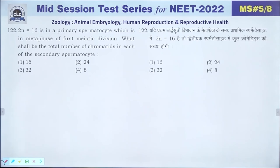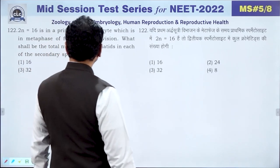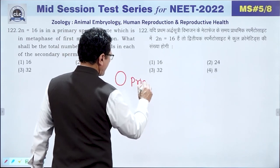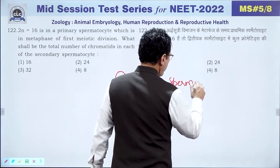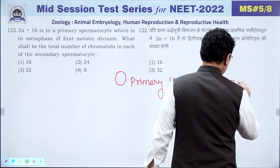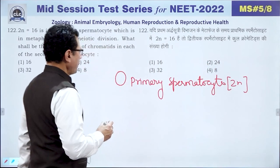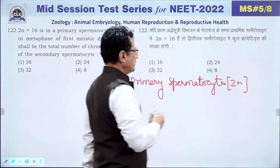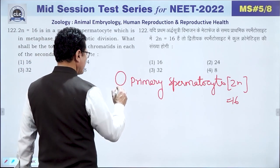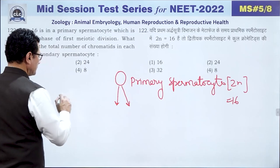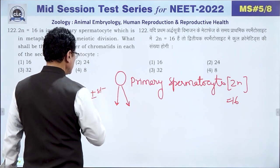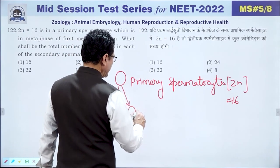Question: if 2n = 16 in a primary spermatocyte, after meiosis I (reduction division), the secondary spermatocyte has n = 8 chromosomes. After meiosis II, spermatids also have 8 chromosomes. The question asks about the number of chromatids in the secondary spermatocyte.